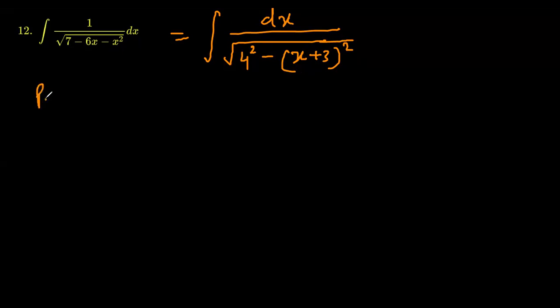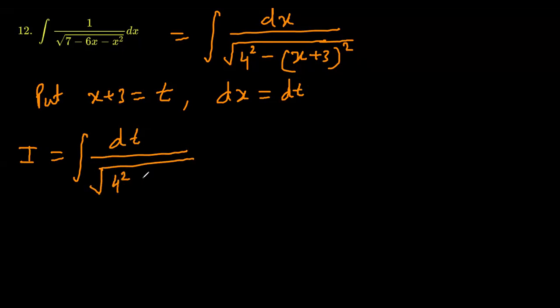Simply put x plus 3 is equal to t first. That will give you dx is same as dt. And if you represent this question by I, your integral is going to look like dt over square root of 4 squared minus t squared.